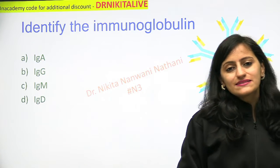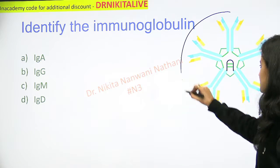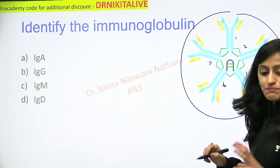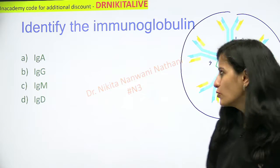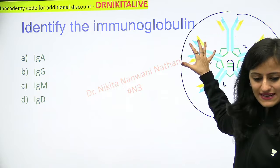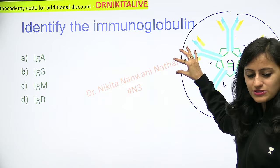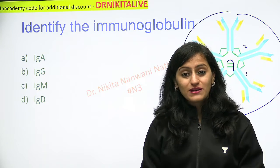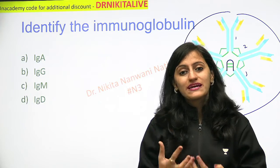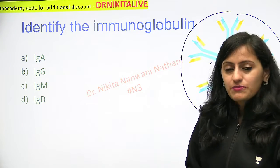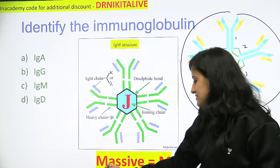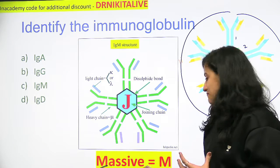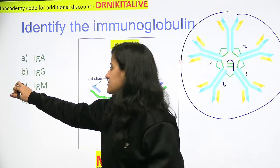What we see in this immunoglobulin structure is that it is a pentameric structure — we have one, two, three, four, and five. So it is a pentamer. A routine immunoglobulin would be a monomer with heavy chains and light chains, but here we see five of them. The question is: which immunoglobulin is a pentamer? Pentamer means it is very heavy, very massive. The mnemonic is 'massive' — maximum molecular weight — and for M, it is IgM. So the answer here is IgM.